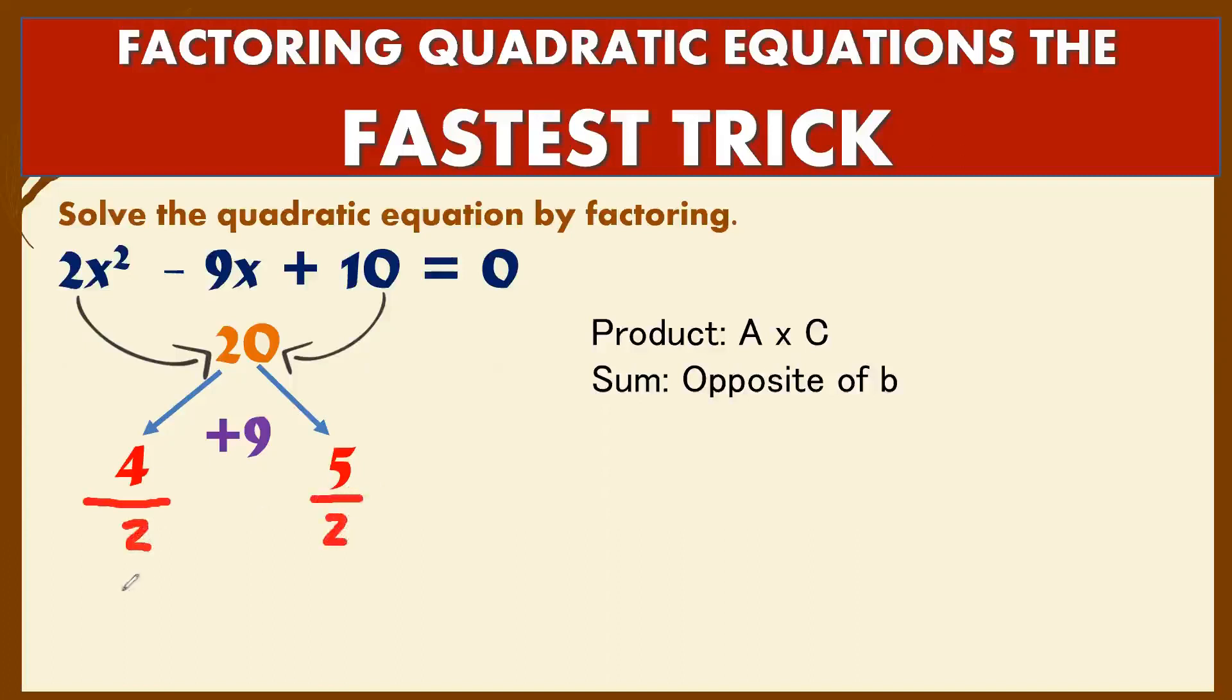After which, divide both terms by your A, which is 2. 4 divided by 2 and 5 divided by 2. So your x₁ is equal to 2, your x₂ is equal to 2.5.